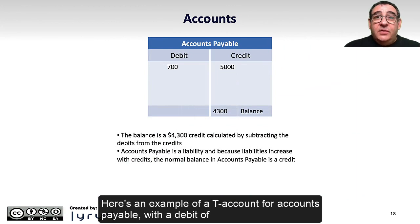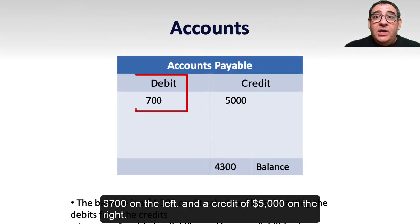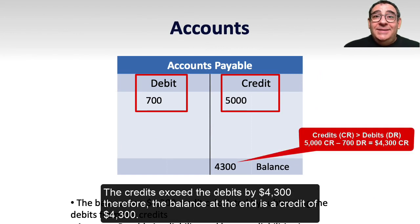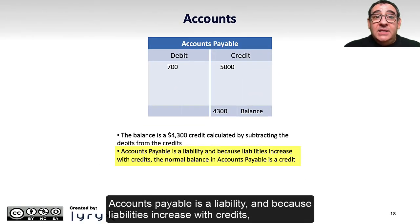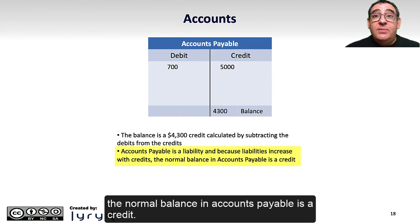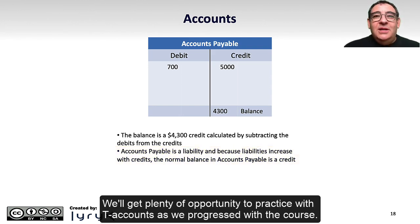Here's an example of a T-account for accounts payable, with a debit of $700 on the left and a credit of $5,000 on the right. The credits exceed the debits by $4,300, therefore the balance at the end is a credit of $4,300. Accounts payable is a liability, and because liabilities increase with credits, the normal balance in accounts payable is a credit. We'll get plenty of opportunity to practice with T-accounts as we progress through the course.